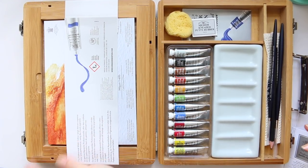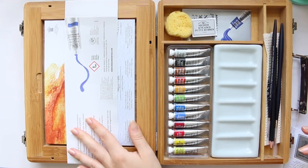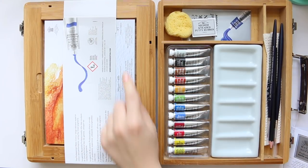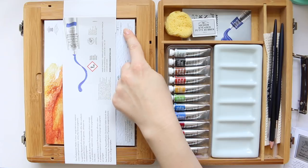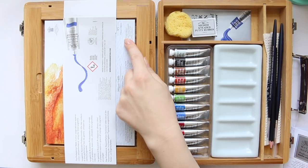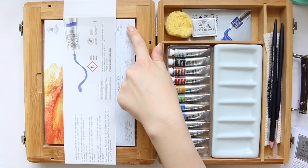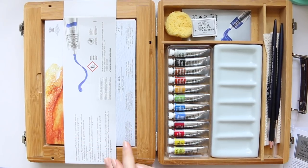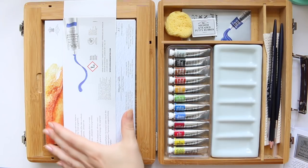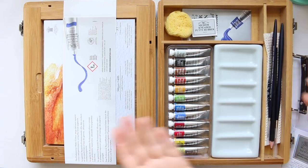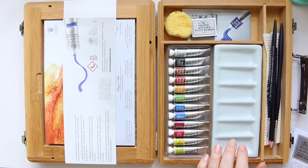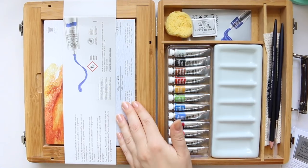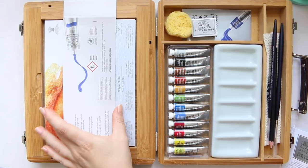Then there is this section here which is perfect for this 210 by 148 millimeters, so 21 centimeters by 14.8 centimeters paper pads. So if in the future you want to replace a paper pad, that's the size you would need to get to take with you or to fit into this lid.